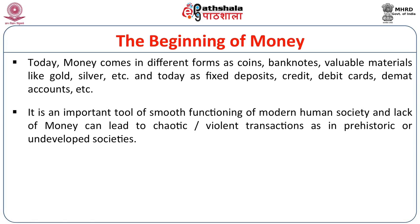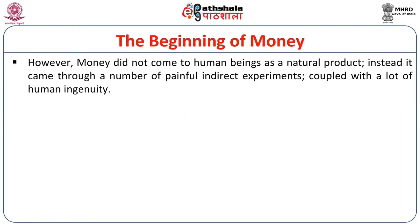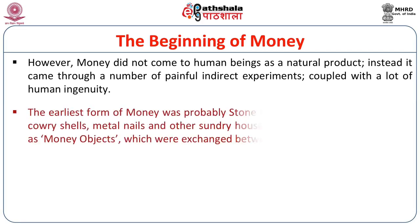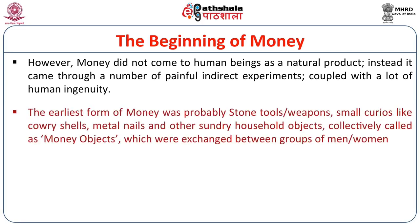But this was not the case in prehistoric or undeveloped societies, as in that period money did not come as an immediate object — it was not a natural product. Instead it came through painful indirect experiments coupled with a lot of human ingenuity. At various periods of human history we see various objects which functioned as money, not only coins. Many objects earlier termed as barter objects are today termed as money objects, because we now better understand that they actually functioned as money.